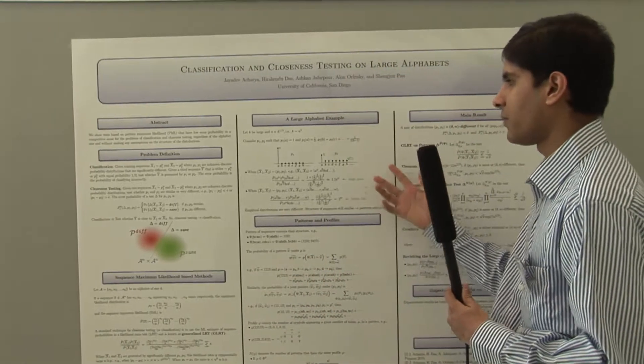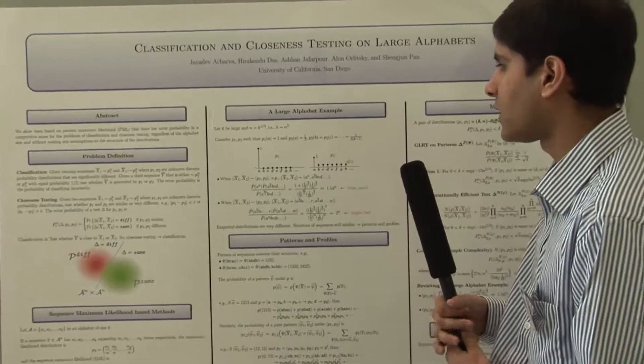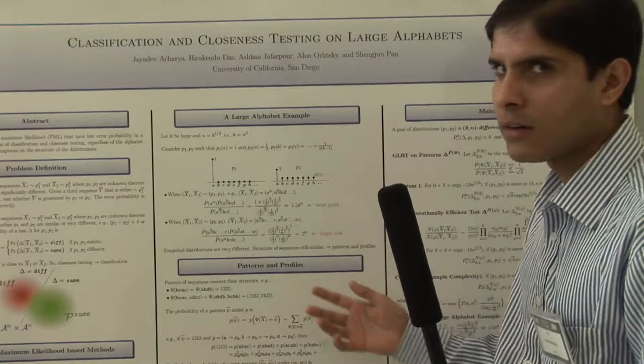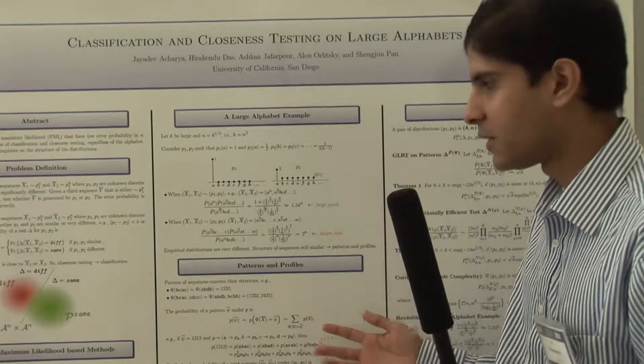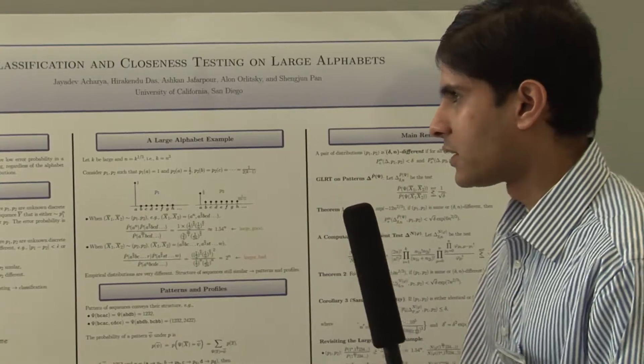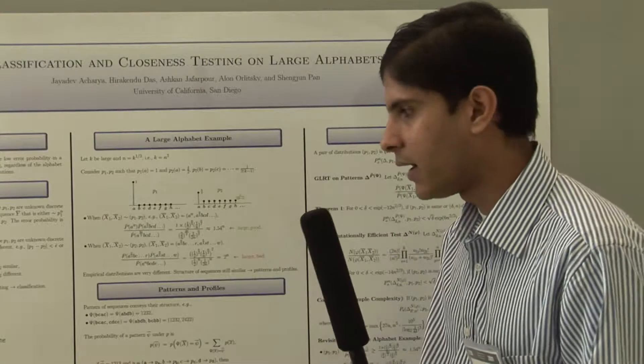In fact we can see that for large alphabets it doesn't quite work out. So instead, what you need to look at is another statistic, which is the number of symbols which have appeared once, number of symbols which have appeared twice, and so on. That's the information which we call profile.